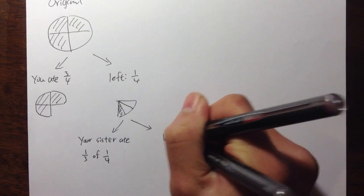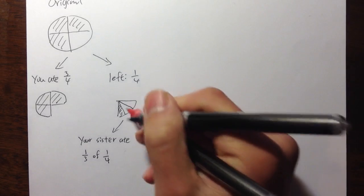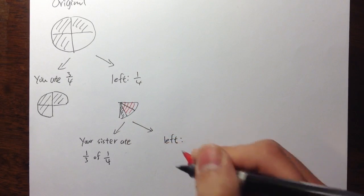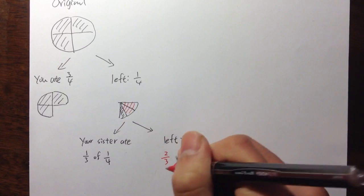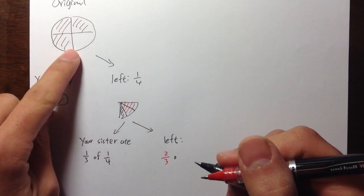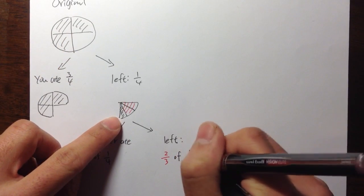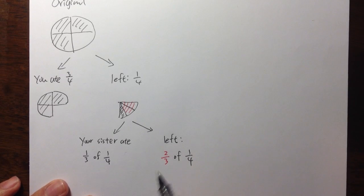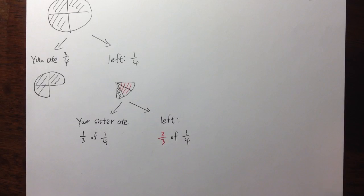And what's left? As we can see, we now have two pieces left. The amount remaining is two thirds — but again, two thirds not of the original. It's two thirds of the amount that was left, of the quarter piece that was left. So what's left is two thirds of one over four, two thirds of the quarter.